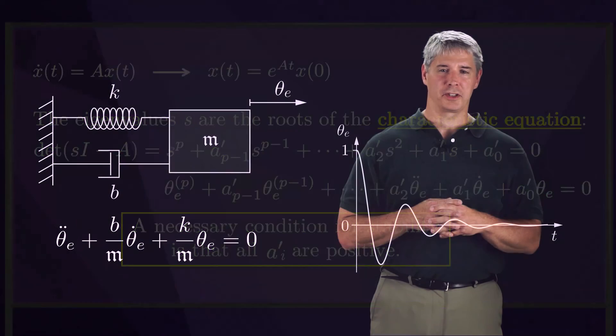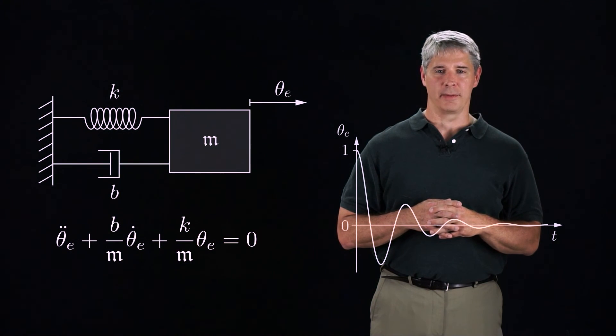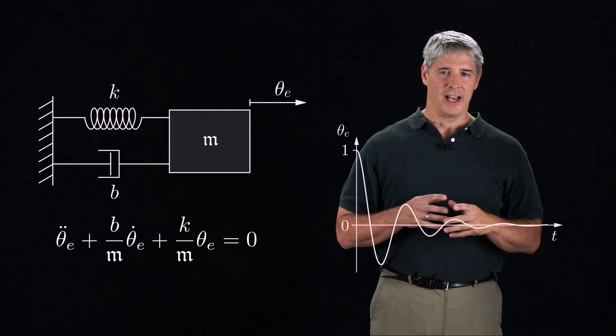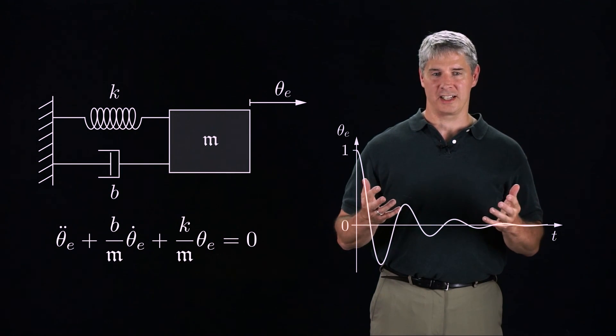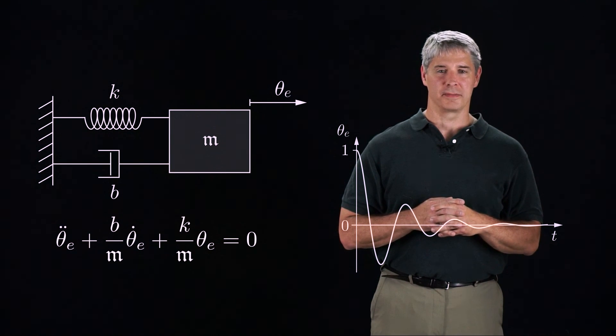In the coming videos, we will return to the second-order error dynamics we saw at the beginning of this video, as it is the simplest error differential equation that exhibits overshoot and oscillation, which are common behaviors in controlled systems.